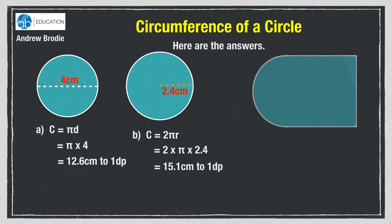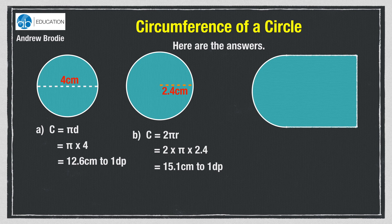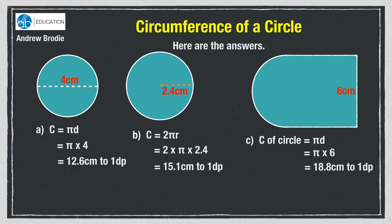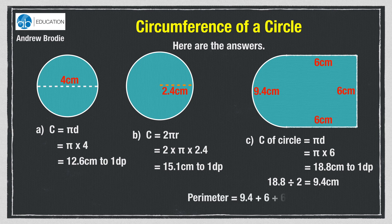Question c is about a shape made from a semicircle joined to a square. First job is to find the circumference of the whole circle. We know it has a diameter of 6cm because it's joined onto a square with sides of 6cm, so the circumference of the circle will be pi times 6, which is 18.8cm to one decimal place. We need to find half of that, so we divide by 2, so we now know the length of the curved part of the shape. The three straight sides are all 6cm, so the total perimeter is 27.4cm.